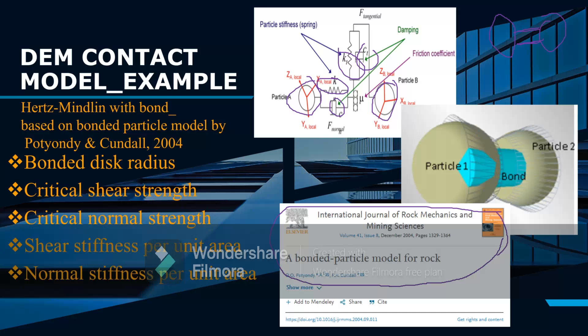The bond needs to have certain properties. For example, a bonded disc radius as shown, a strength, and a stiffness in two directions. We're talking about critical shear strength in the shear direction and shear stiffness per unit area.